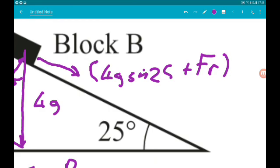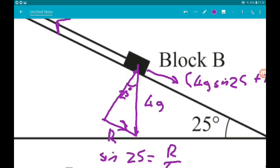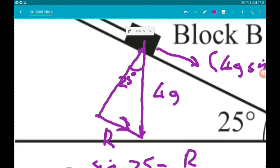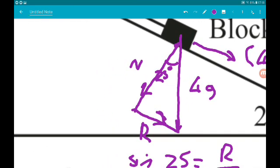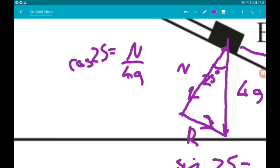Okay, now what we also need is the normal reaction force to the block, between the block and the plane. So again using SOHCAHTOA, we know that cos 25 is n over 4g. So we know that n is 4g cos 25.